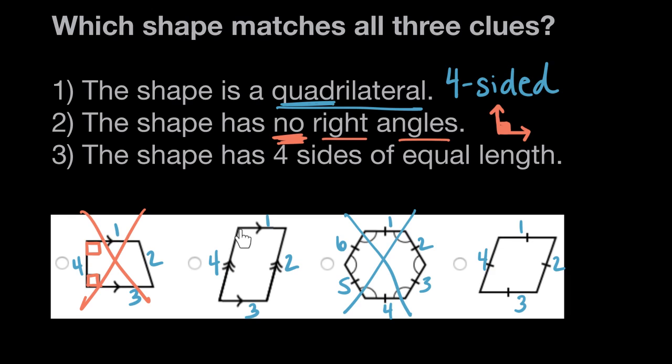Shape two does not have any right angles. These are not squared off corners. And same with shape four, no right angles, so both of those still match both clues one and two. So we have two shapes left. They're both quadrilaterals, and they have no right angles.